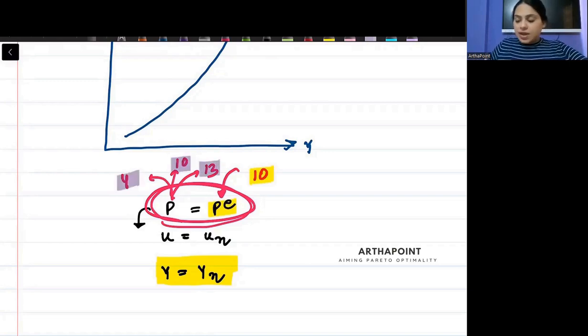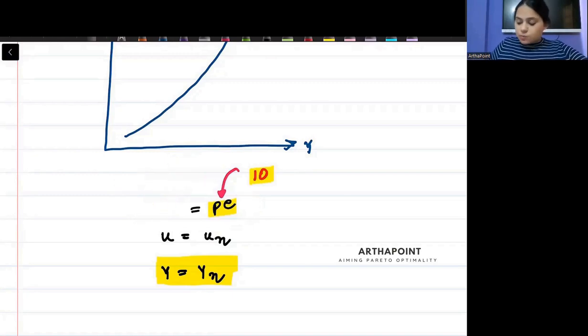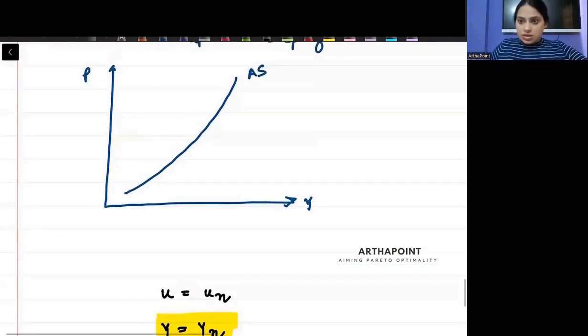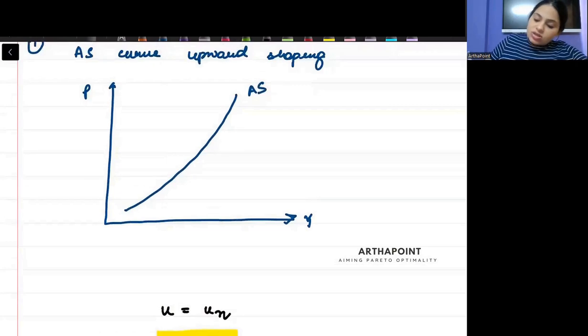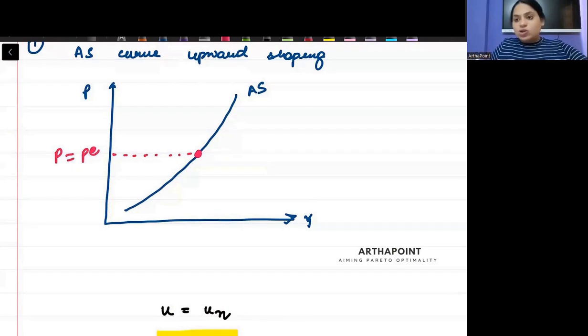So you may form some expectation, but the actual price can be anything: 4, 10, 13, anything. But it can be 10 also. It can be equal to expectation also. So what I am saying here is that on this AS curve, there will be a point. At this point, price will be equal to the expected price.